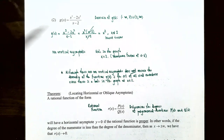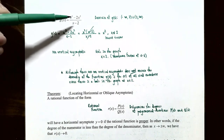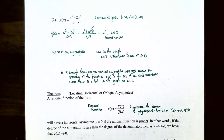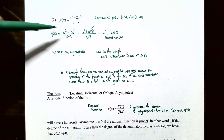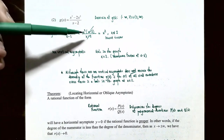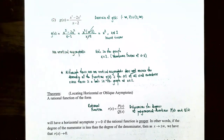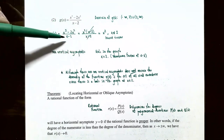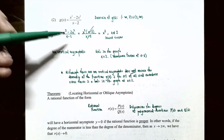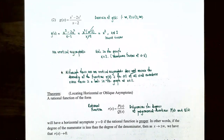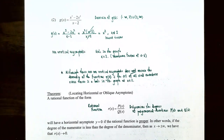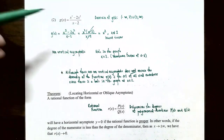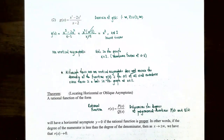Number two: g(x) equals x cubed minus 2x squared in the numerator and x minus 2 in the denominator. Simplifying to lowest terms: factor out x squared from the numerator to get x squared times (x minus 2), and the denominator is x minus 2. The common factor x minus 2 cancels, so g(x) simplifies to x squared. However, x cannot equal 2 because the original function has x minus 2 in both numerator and denominator, giving 0 divided by 0, which is undefined.